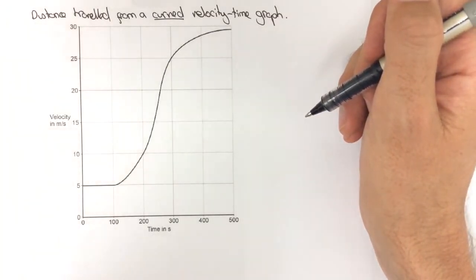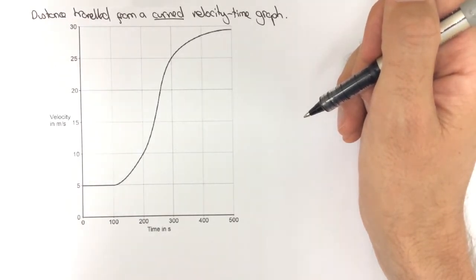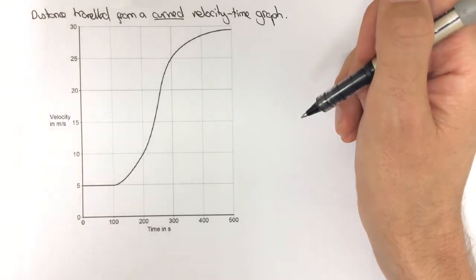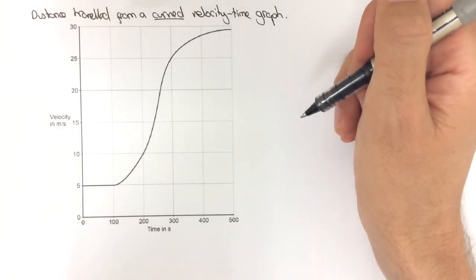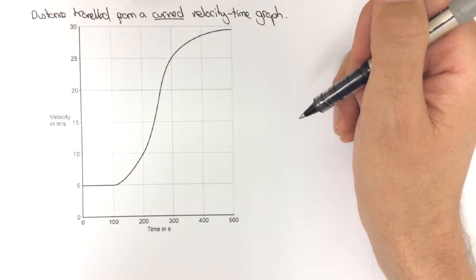Now with a straight line graph that's relatively straightforward in that the area can be found as a rectangle, a trapezium or a square, maybe a triangle. However with a curved line it's a bit more difficult.